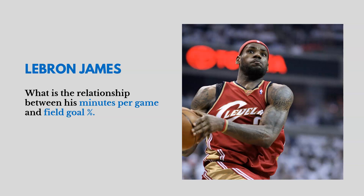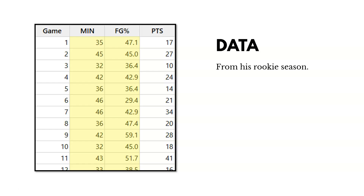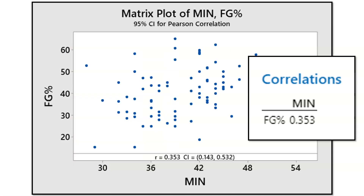Let's look at an example with basketball player LeBron James. We want to understand the relationship between his minutes per game and his field goal percentage. We'll gather data from his rookie season showing, by game, the minutes he played and his field goal percentage — which is the percentage of shots he actually makes. I used a tool called Minitab to do this, but you can use Excel or other tools. Once I do that, I get a scatterplot and a correlation coefficient, with one axis showing minutes per game and the other showing field goal percentage, where every data point represents a different game.